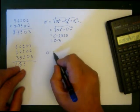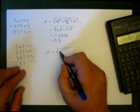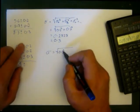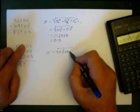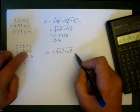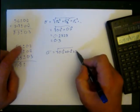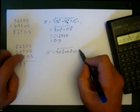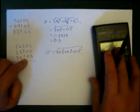So I can go sigma, the uncertainty is equal to square root of 0.2 squared for that measurement, plus 0.2 squared for that measurement, plus 0.3 squared for that measurement.